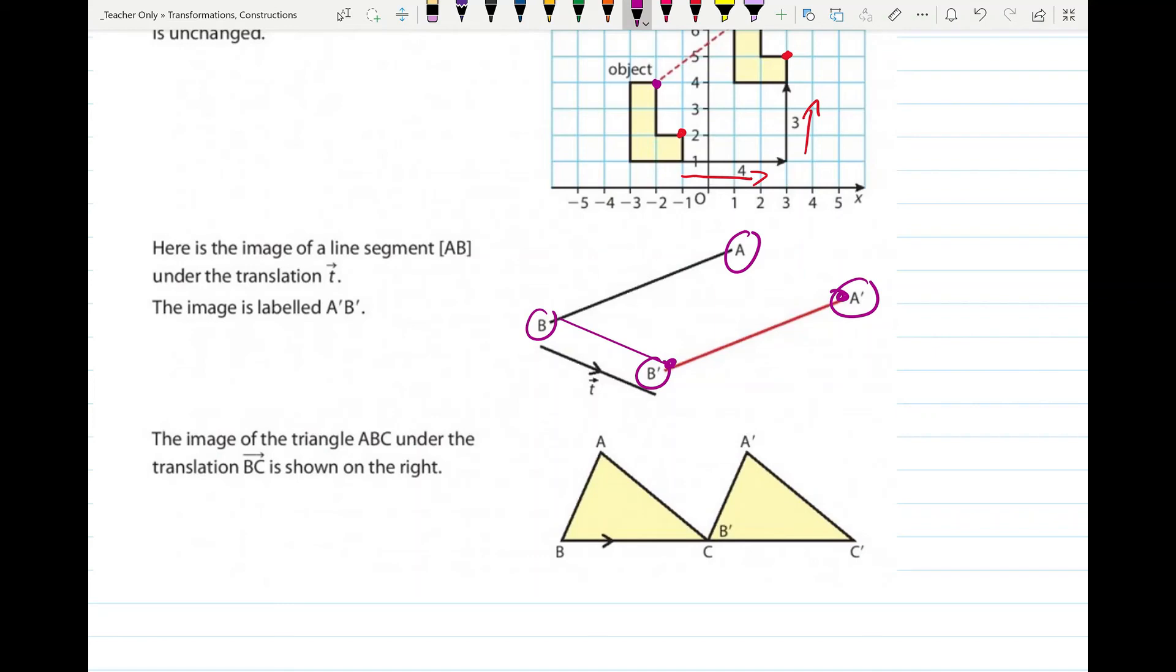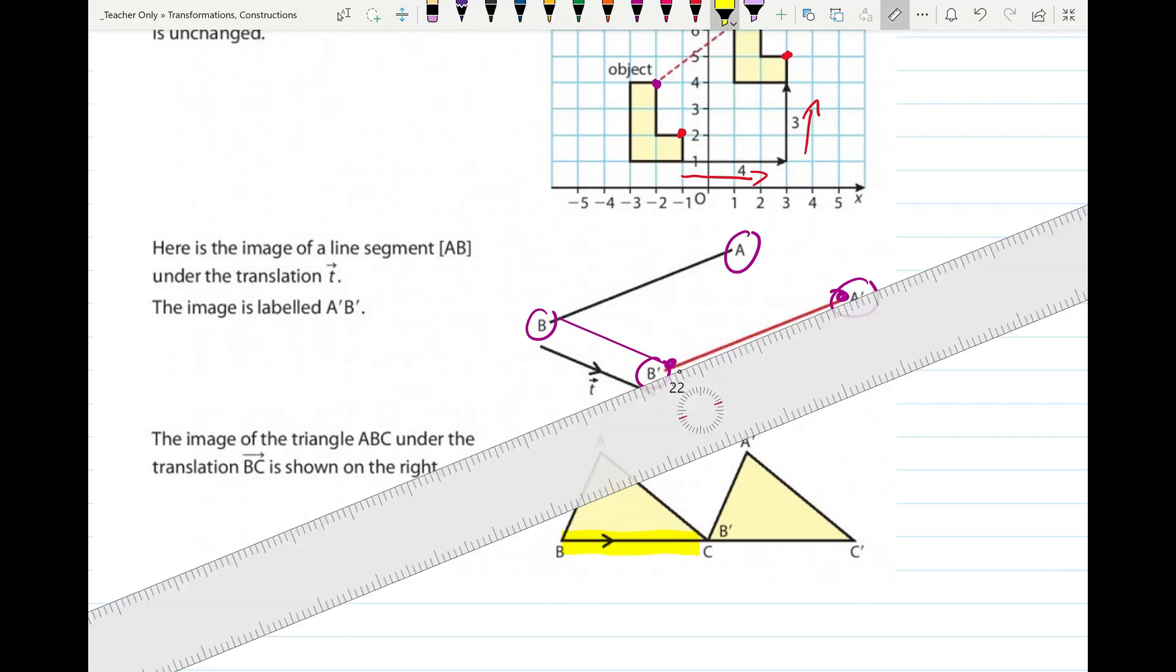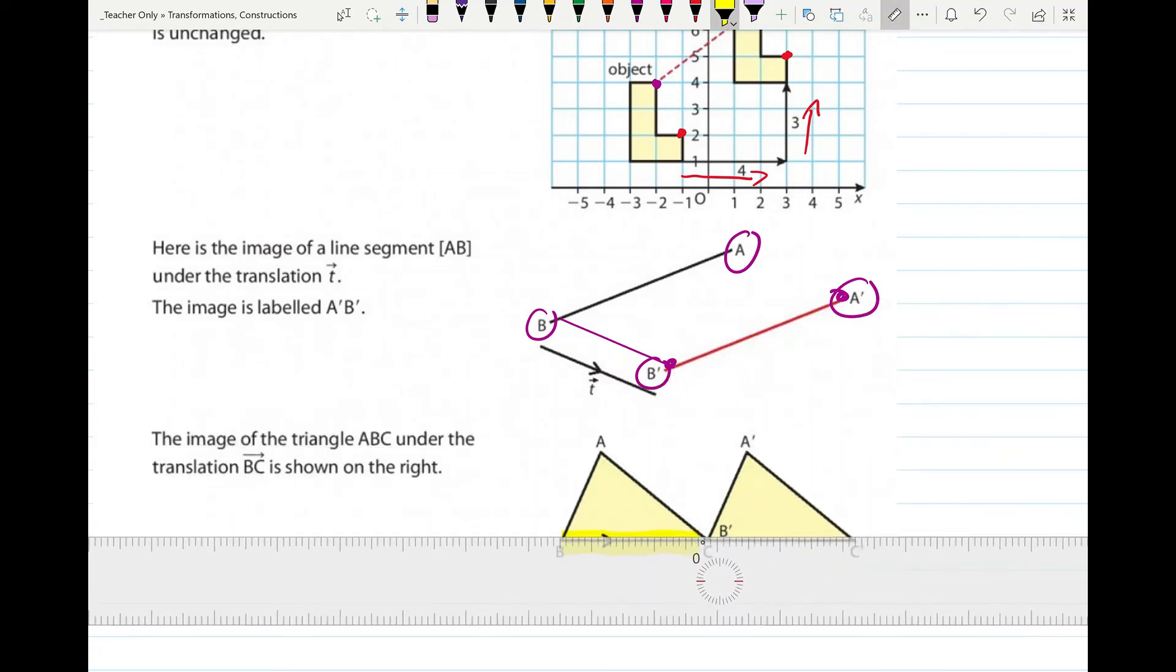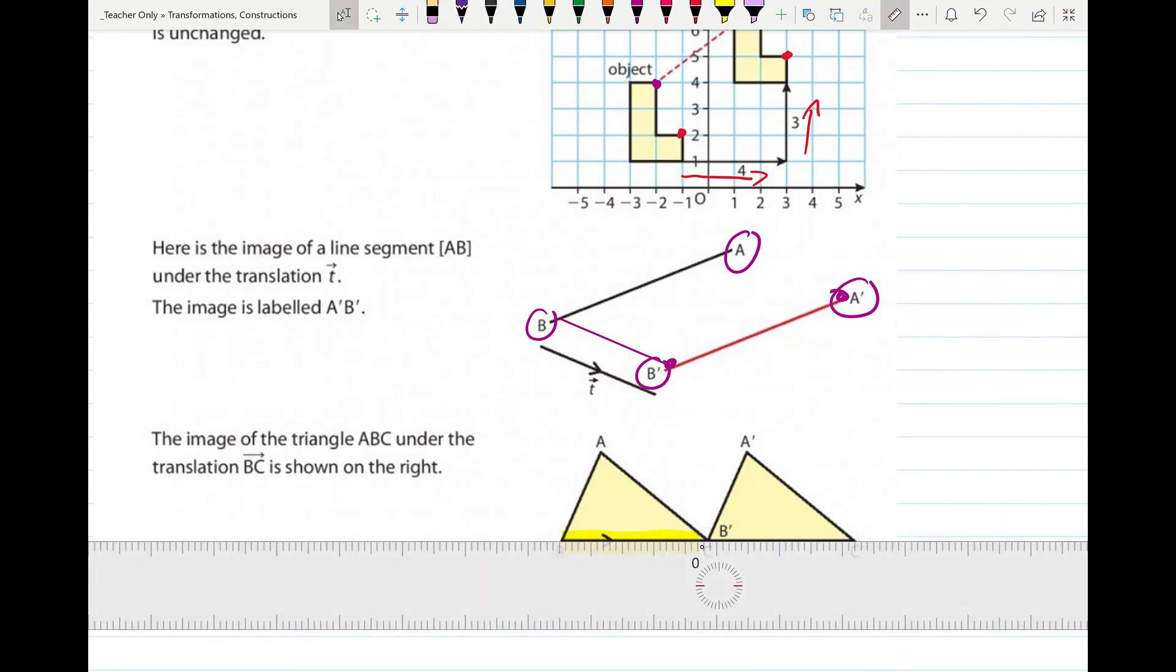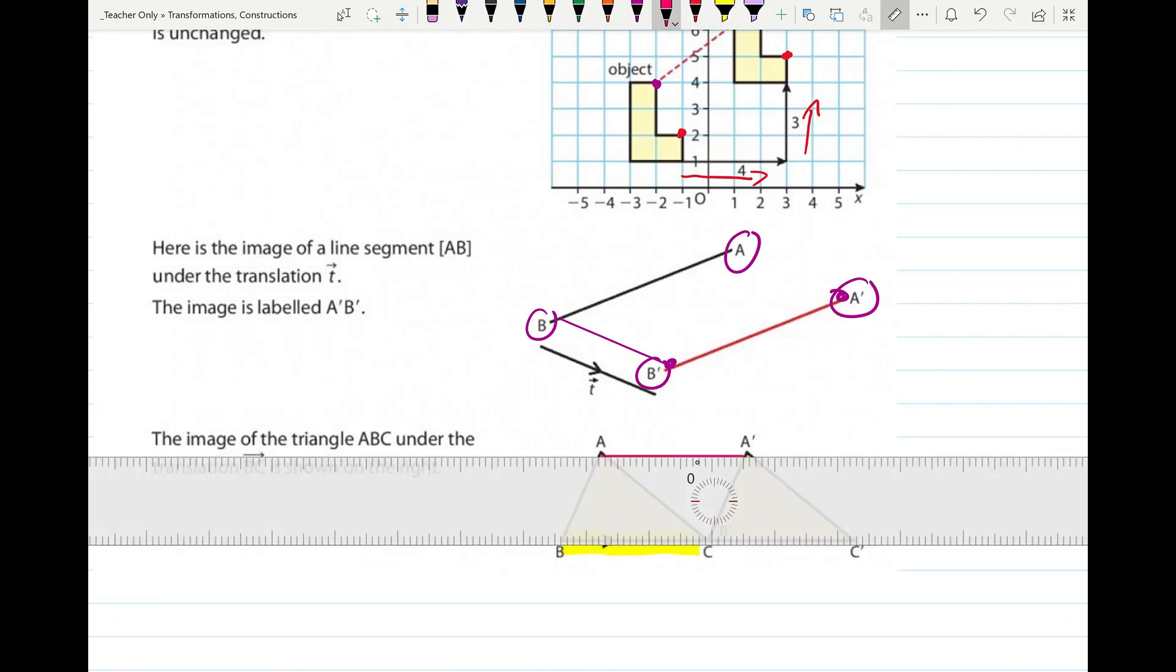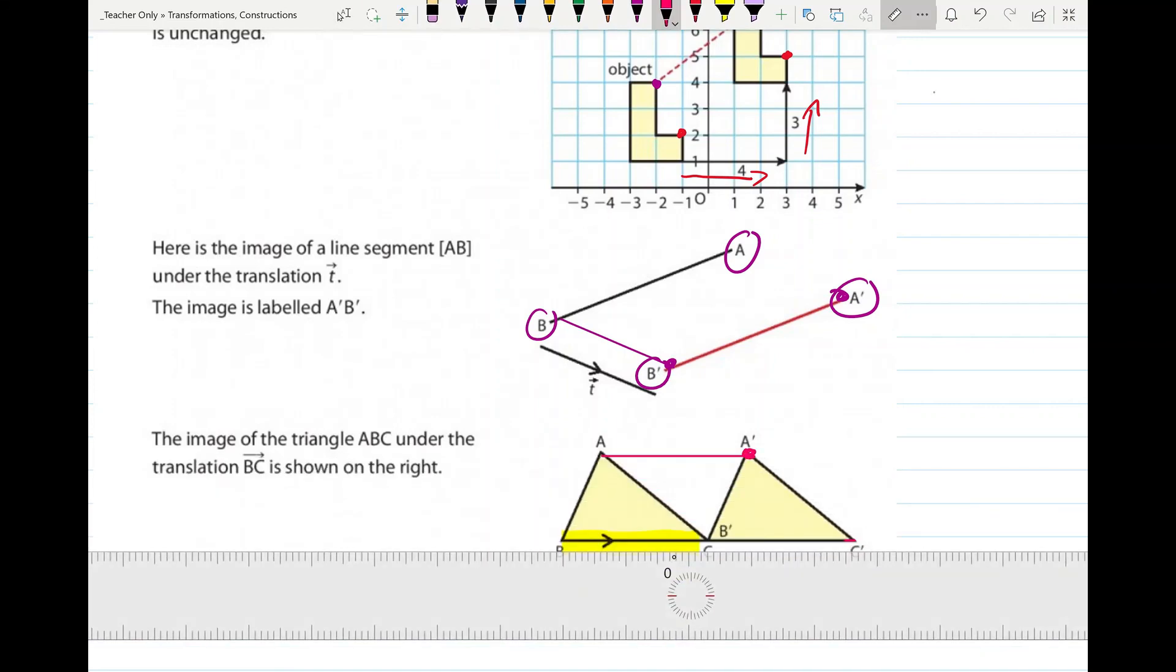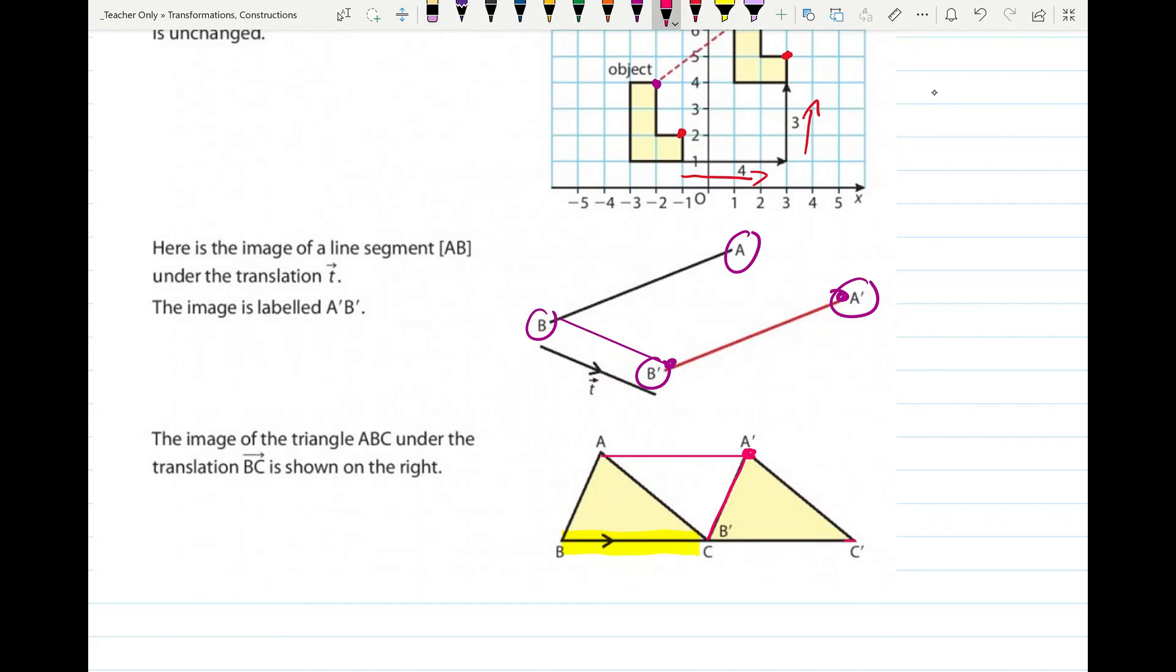And the final part, the image of the triangle ABC under the translation B to C is shown on the right. So we have A, B and C. And this triangle then gets moved by the translation B to C. So it's getting moved this length in that direction. So parallel to that line there. So B will get moved to where C is. So B dash sits on top of C. C will move the same distance as far as C dash. And A will move the distance BC up to A dash. So it'll move up to there. And we get our new triangle A dash B dash C dash.